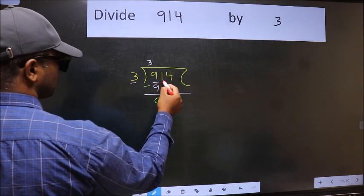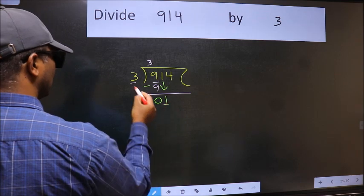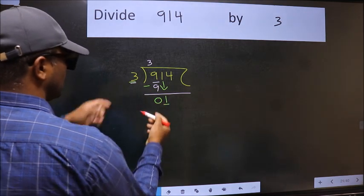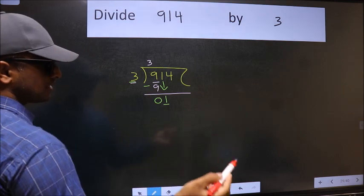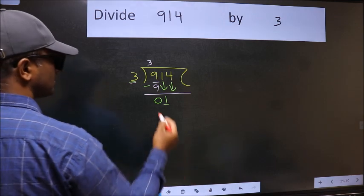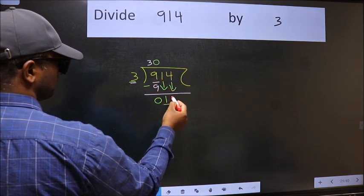After this, bring down the beside number. So 1 down. Now here we have 1 and here 3. 1 is smaller than 3, so we should bring down the second number. And the rule to bring down the second number is we should put 0 here. Then only we can bring this number down.